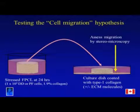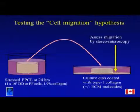So we tested this using FPCLs — fibroblast-populated collagen lattices — which we've been doing for ten years. We modified the system: we got stressed FPCLs, stressed them for 72 hours, allowed them to differentiate into myofibroblasts, released them for 24 hours, then pulled them out and put them on another culture dish. This dish had been pre-coated in type 1 collagen, plus or minus some of the extracellular matrix molecules previously identified in gene arrays. We wanted to see if cells could migrate out of a stressed FPCL into the surrounding cell-free collagen, and whether these ECM molecules made a difference.